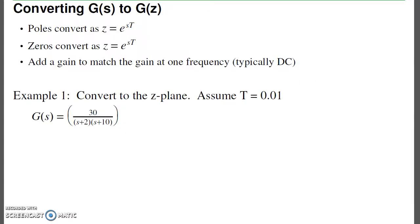To convert from the s-plane to the z-plane, the relationship is z = e^(sT). Poles convert as z = e^(sT). Zeros convert as e^(sT). Plus, you add a gain k. If I have one degree of freedom—the gain to put out in front—I can match the gain at one frequency. Typically, you match the gain at DC.